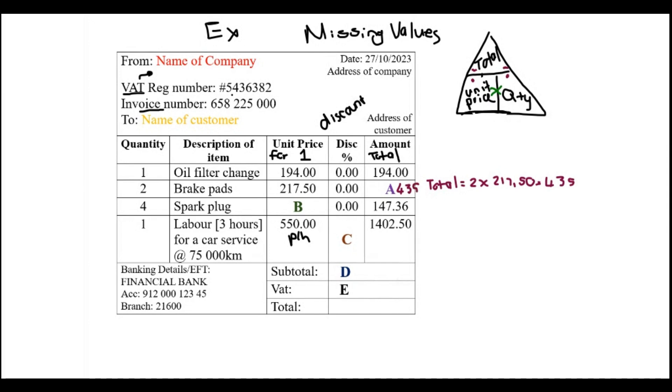Next I see the B, the spark plugs. There were four of them and that's the total, so now I'm looking for the unit price. If I want to find the unit price B, I need to divide, so I need to say the total divided by the quantity - total in this case one four seven point three six divided by four - and that gives you thirty six point eight four.